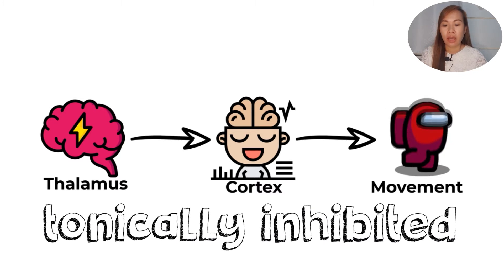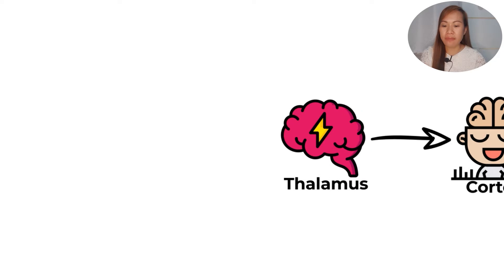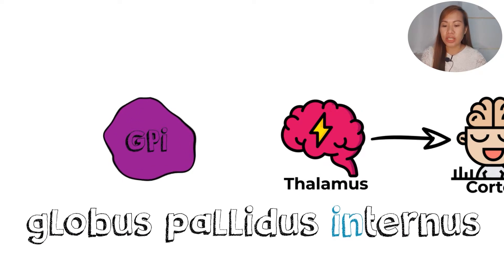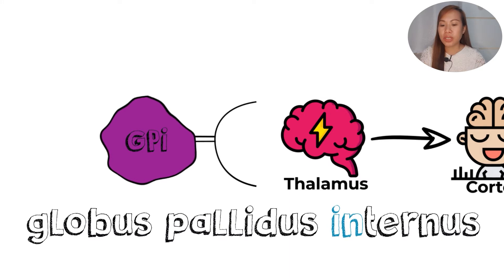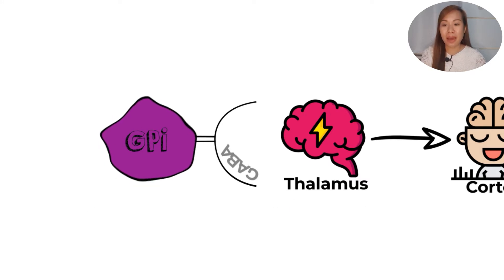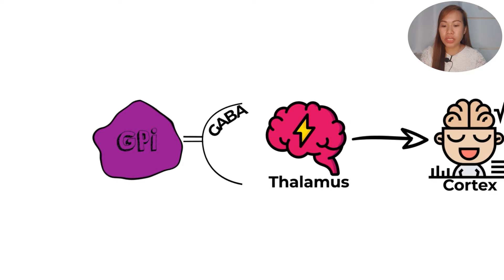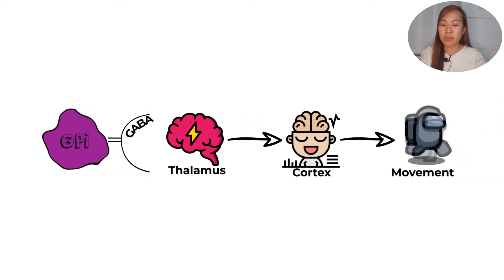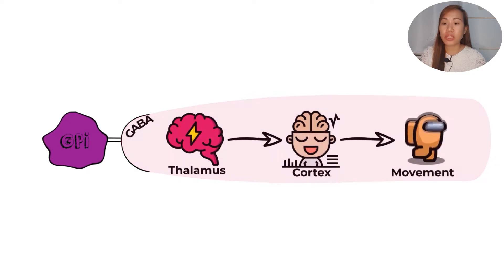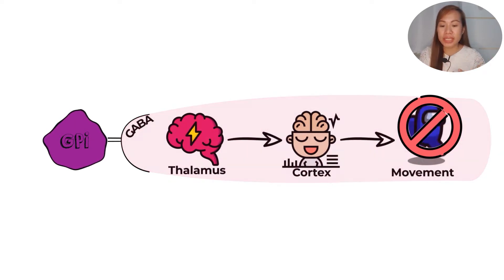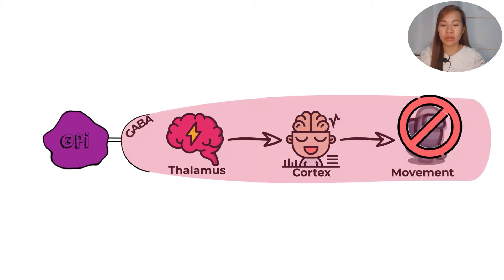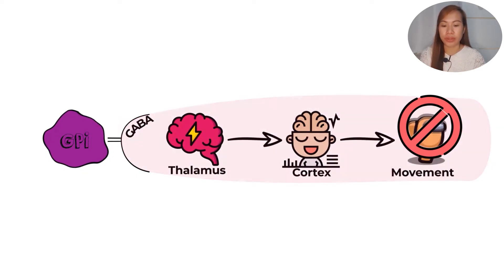So what inhibits the thalamus? We have what we call the globus pallidus internus, GPI. This is what will inhibit the thalamus. The globus pallidus internus will produce a neurotransmitter that is inhibitory, and that is GABA. If GABA is produced, it will then inhibit the thalamus. If the thalamus is inhibited, it will not be able to stimulate the cortex, therefore there will be no movement.